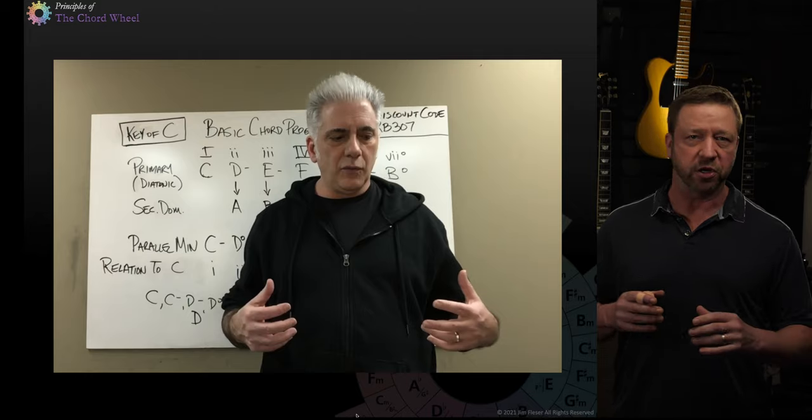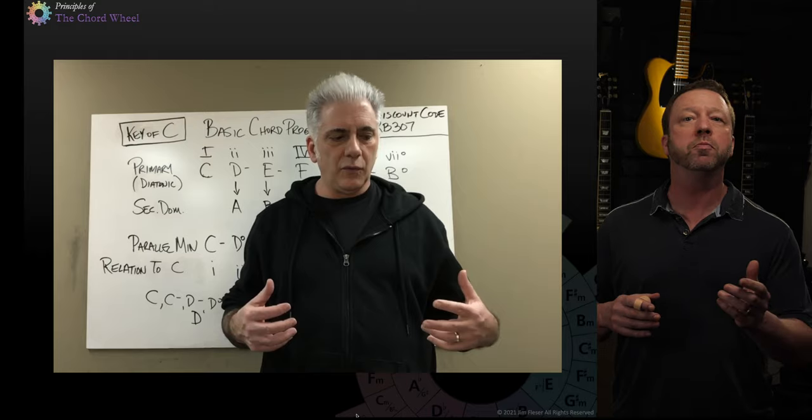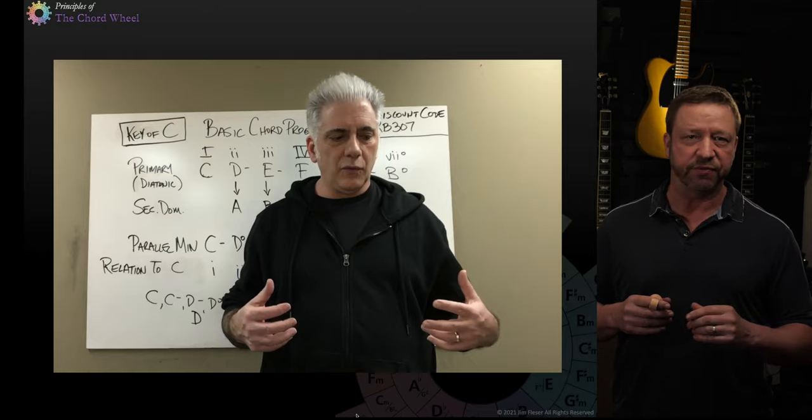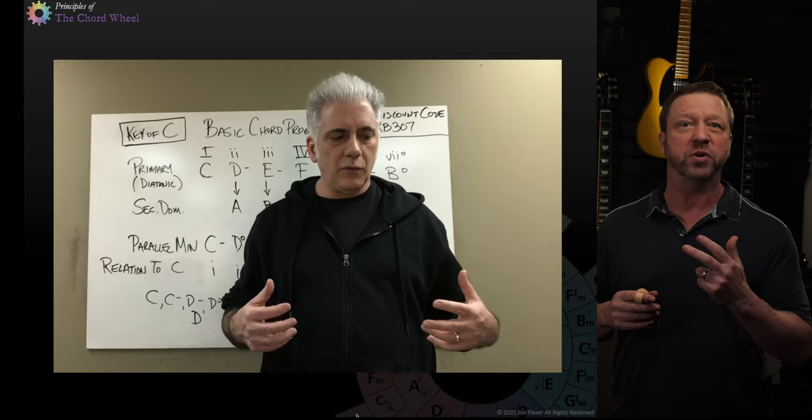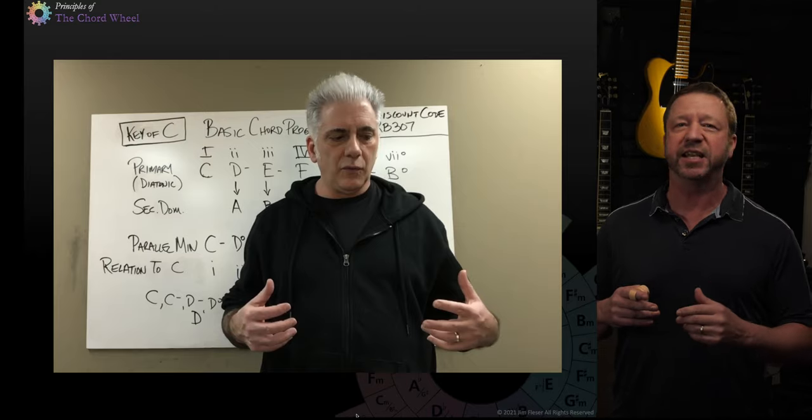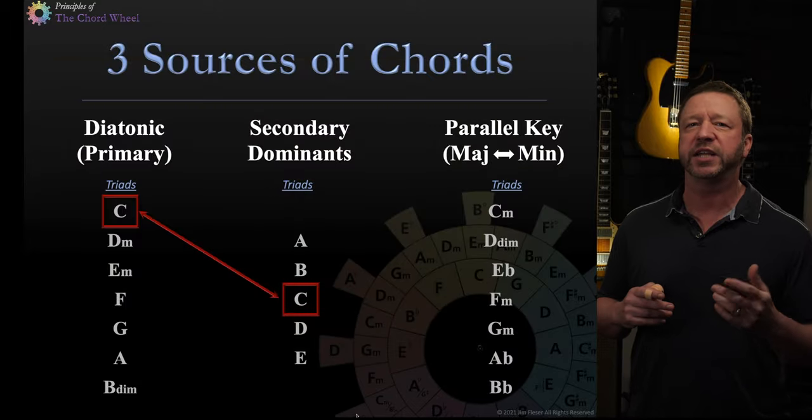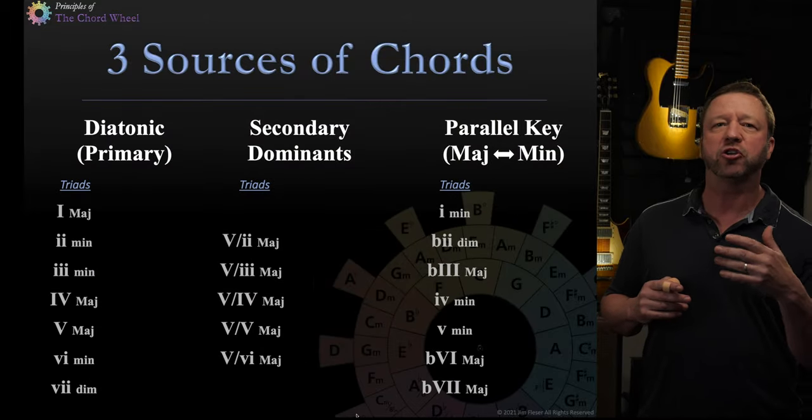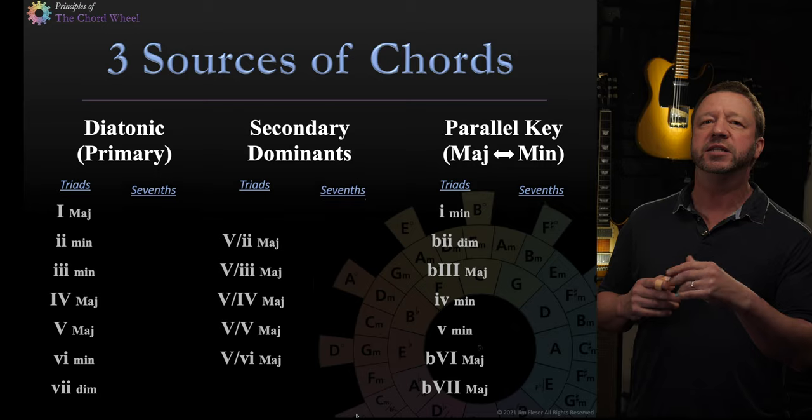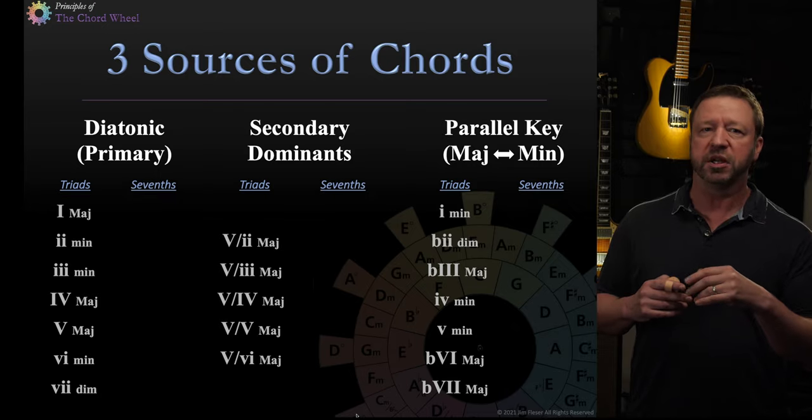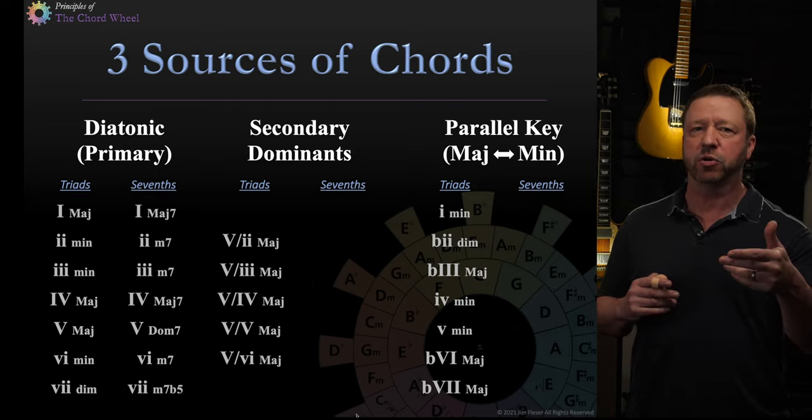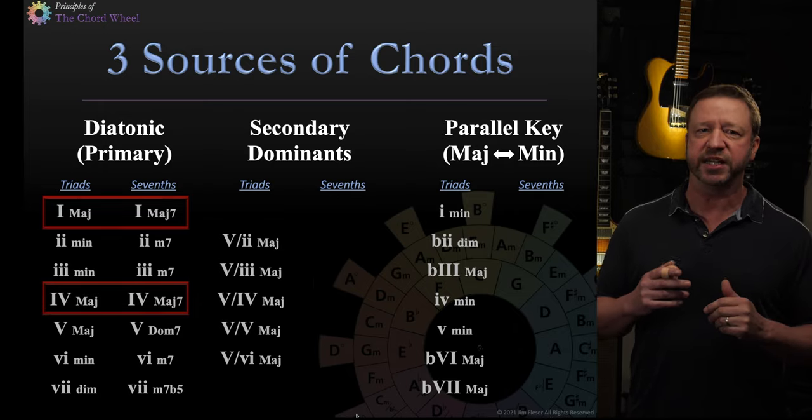Sure, there are some campfire songs that don't have seventh chords. Kumbaya, my lord, doesn't have seventh chords. But Home, Home on the Range, has two seventh chords. So we've got to take them into account anytime we're talking about chord theory. So let's go back to our key of C. And let's take our triads and let's bring them out to seventh chords. So in our diatonic key, we've got seven chords that line up such as this.